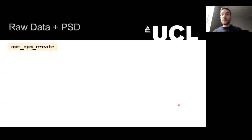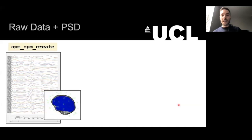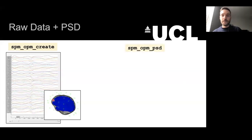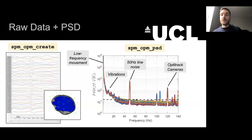We load in the raw data from this experiment using SPM OPM create. It looks quite noisy with a lot of low frequency interference, as the person is making continuous movements around the magnetically shielded room. SPM performs the co-registration for us — you can see sensors all around the head, including over either side of the auditory cortex. Plotting the power spectral density using SPM OPM PSD, we can see many sources of interference: low frequency artifacts from movement, vibrations in the MSR, 50 Hz line noise, and artifacts from the OptiTrack cameras.